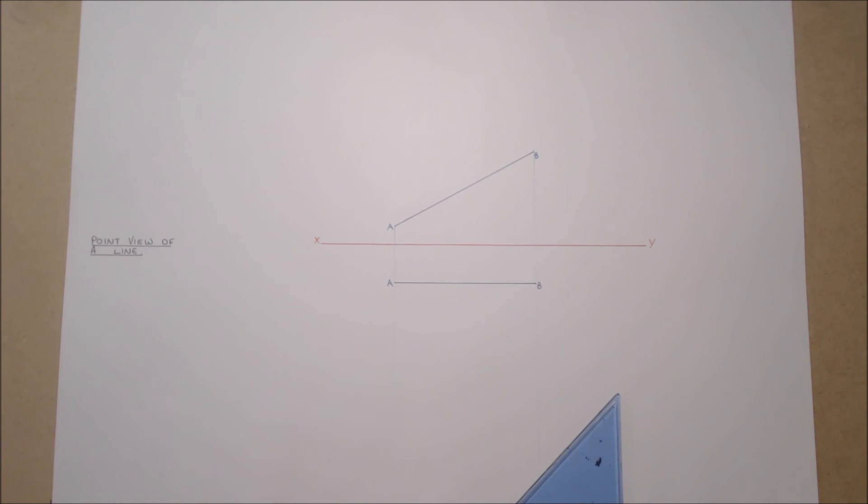Given is the line AB in Plan and Elevation. Find the point view of the line AB.